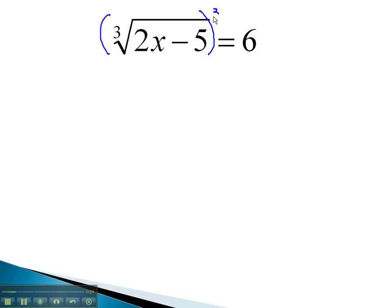The opposite of cube root is 3rd power. Doing the same thing on both sides, cube root and 3rd power will be inverses, leaving just 2x minus 5 equals 6 cubed, or 216.